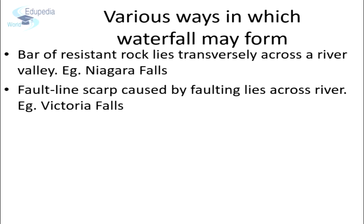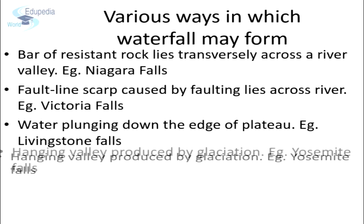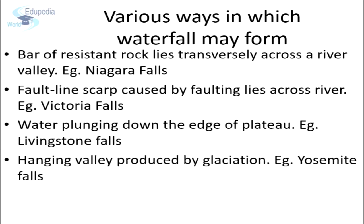Next is water plunging down the edge of a plateau — for example, Livingstone Falls on river Congo, which leaps for 900 feet. Hanging valleys also produce waterfalls, which are caused by glaciation — for example, Yosemite Falls of California, which has a total descent of 2,560 feet.